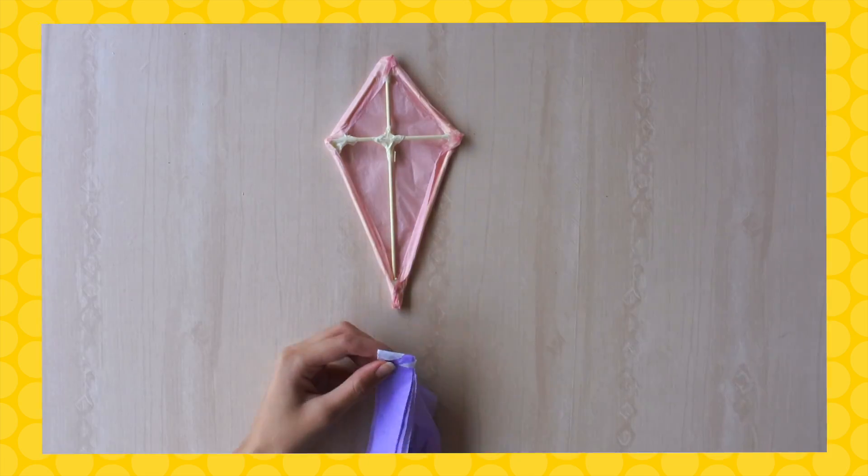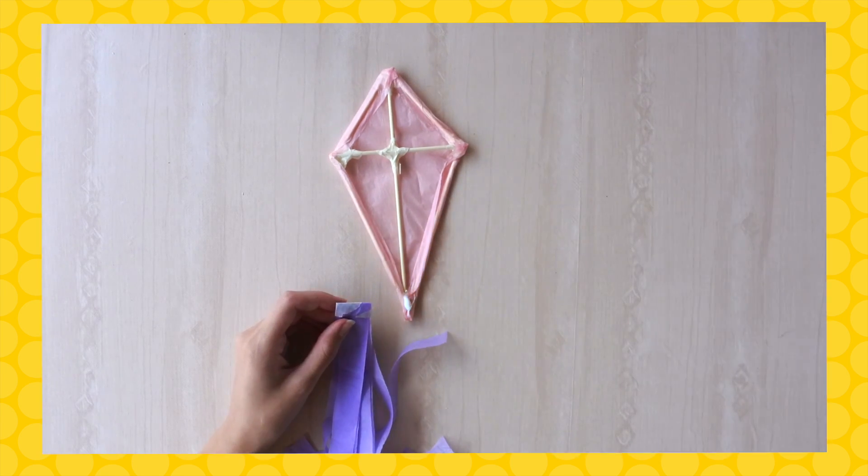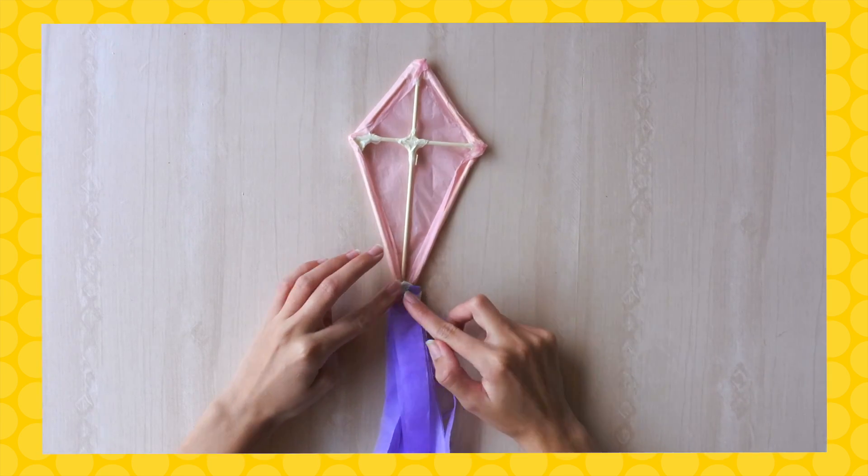Use tissue paper to make your kite look unique. You could even add a tail. Look at pictures of fighting kites for ideas.